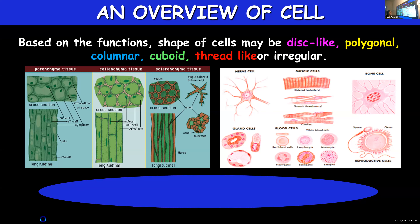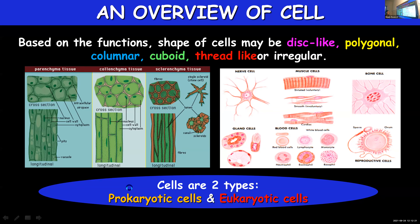The shape of cells can be different depending upon their function. Epithelial cells are flat because they form a covering to protect organs and the body surface. Nerve cells are long because they transmit impulses from one part of the body to another. Cell shapes can be columnar, cuboidal, thread-like, irregular, disc-like, or polygonal. Cells can be broadly classified into two types: prokaryotes and eukaryotes.